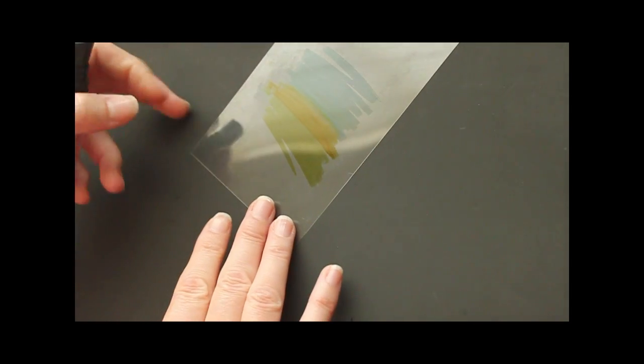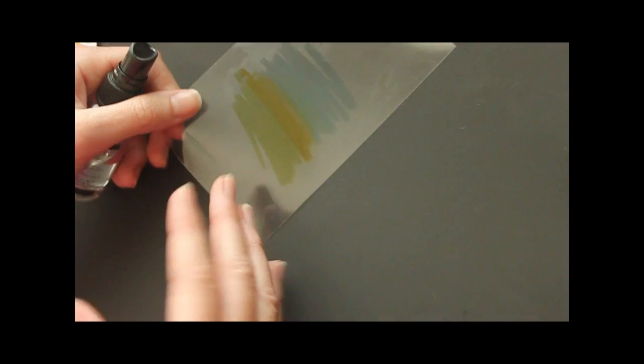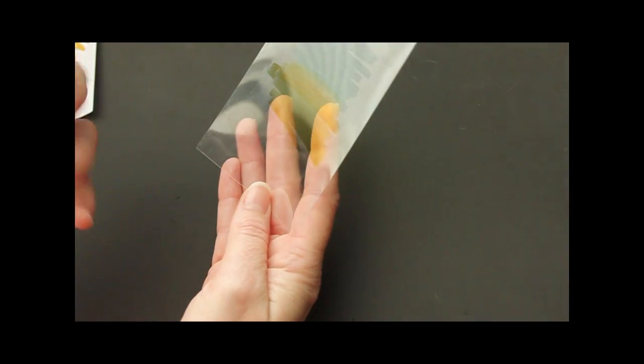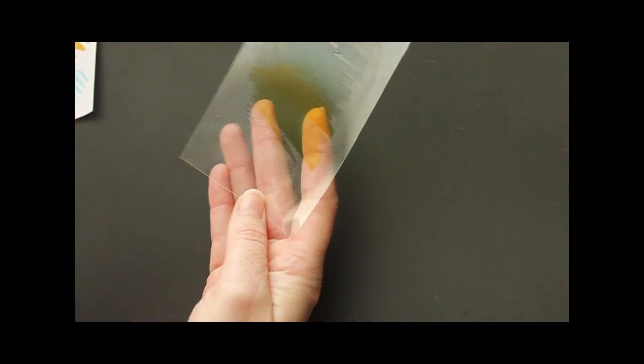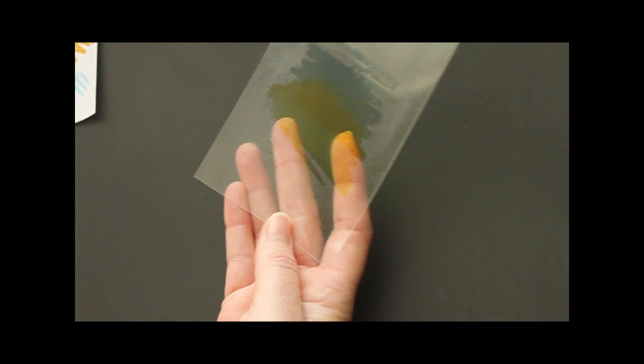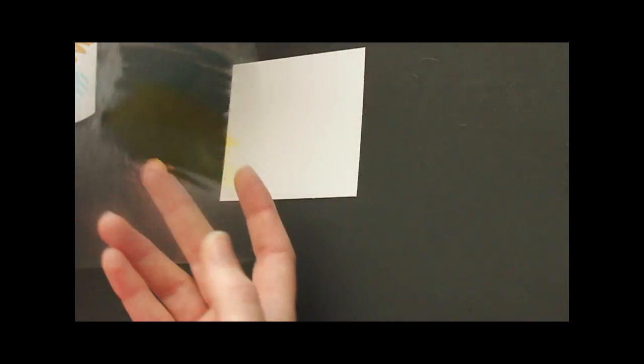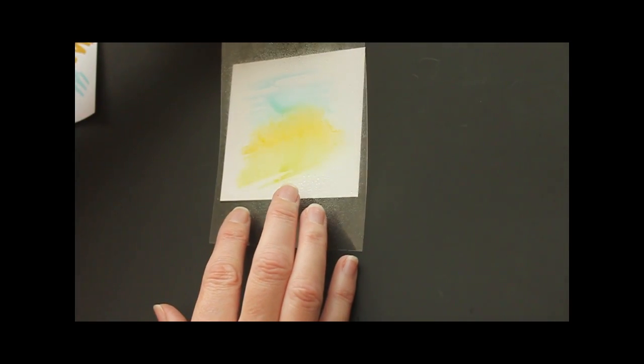When you think you have a big enough area for your paper, just spray this with a little bit of water, and then place that acetate on your cardstock.